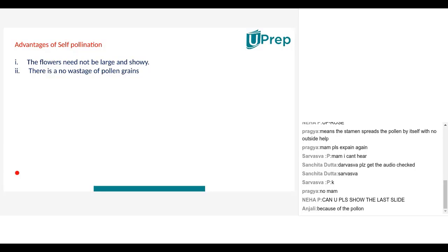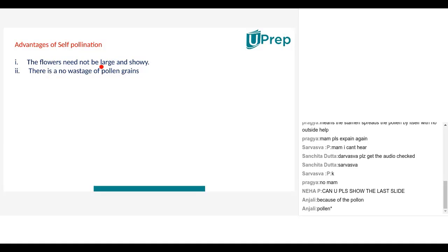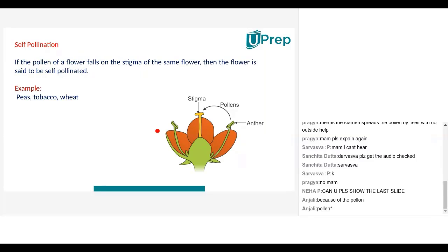Anjali, please quickly type. Because to attract insects, to attract pollinators. But in case of self-pollination, the flowers need not be showy. They need not be large because pollination is happening within the same flower. So it's okay. They know that nobody will come in. I don't need anybody's help. So it's okay. Even if I'm not showy, even if I'm not colorful.